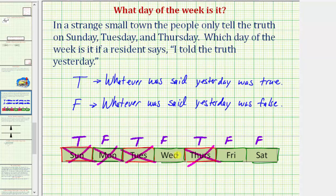The same thing is true on Wednesday. The day before Wednesday is Tuesday, and on Tuesday whatever the resident says is true, not false, and therefore it cannot be Wednesday. And once again, the day before Friday is Thursday, where the resident is telling the truth, which is not false, and therefore it cannot be Friday.